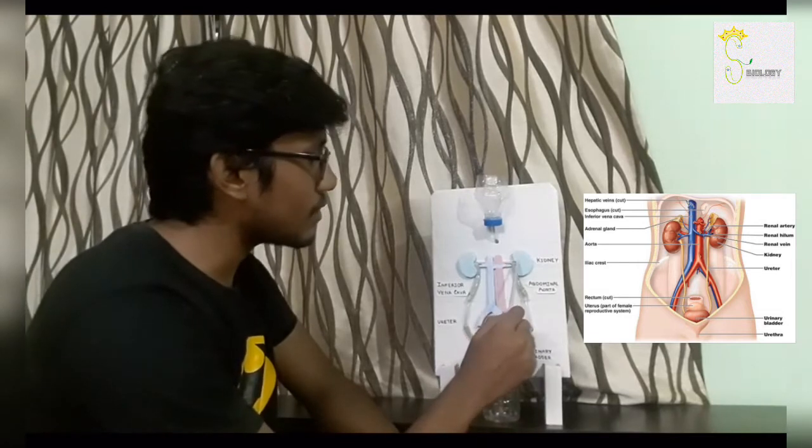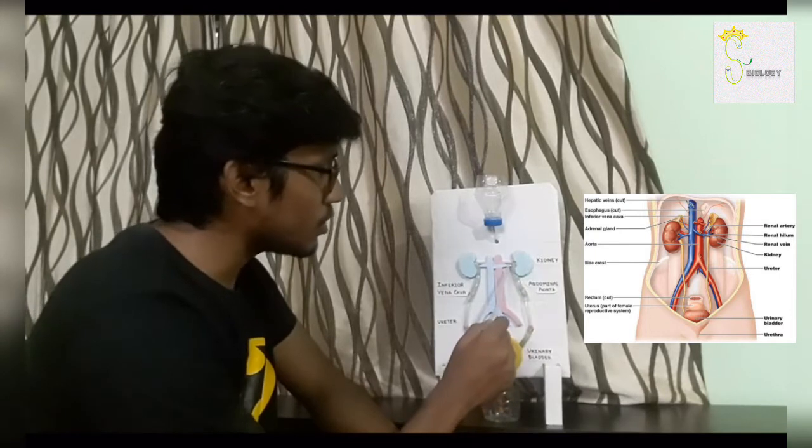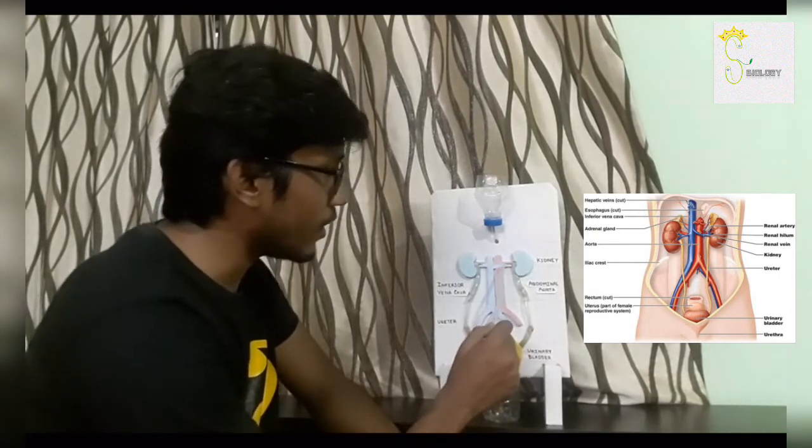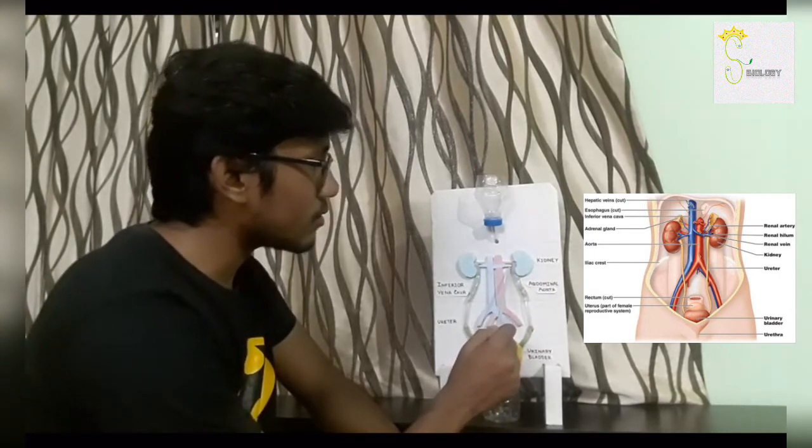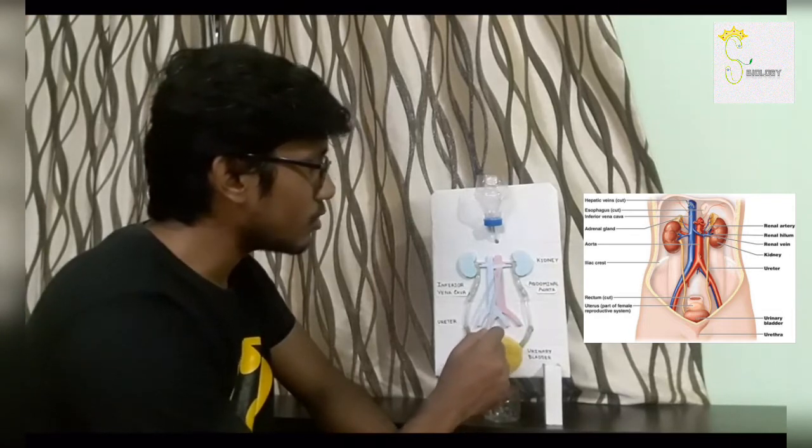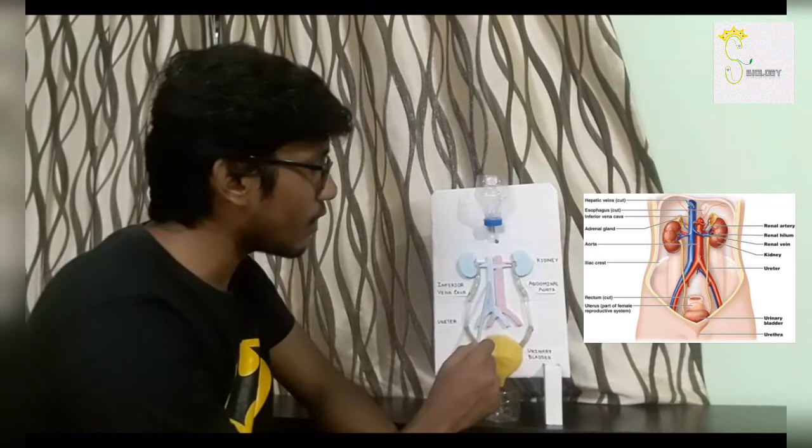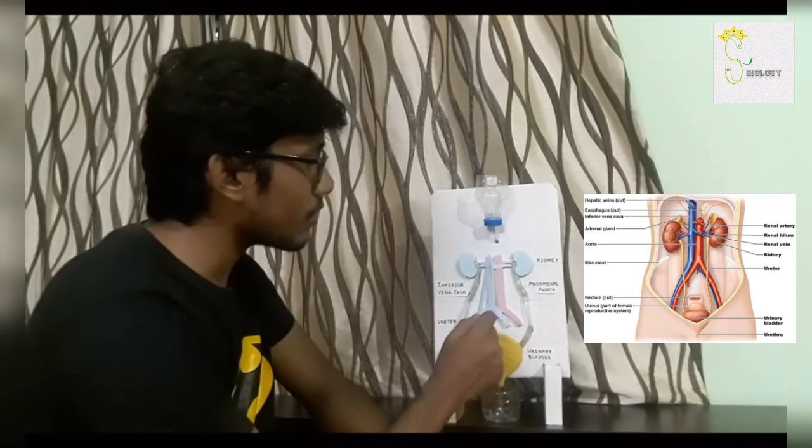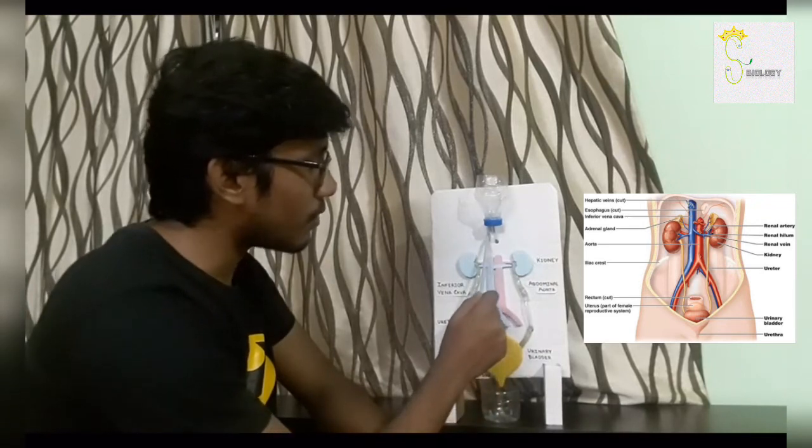Now this renal artery subdivides into the kidney. This blue portion is renal vein. This removes the filtered blood from the kidney to inferior vena cava. Then the inferior vena cava goes to the heart.